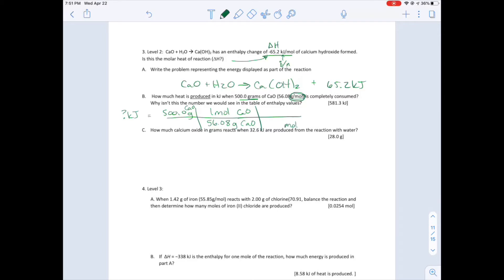So now we're going to go from moles of CaO into kilojoules. Notice, is it balanced? The reaction is balanced. And so in one mole, we have 65.2 kilojoules. When you do this math, you're going to get 581.3 kilojoules.